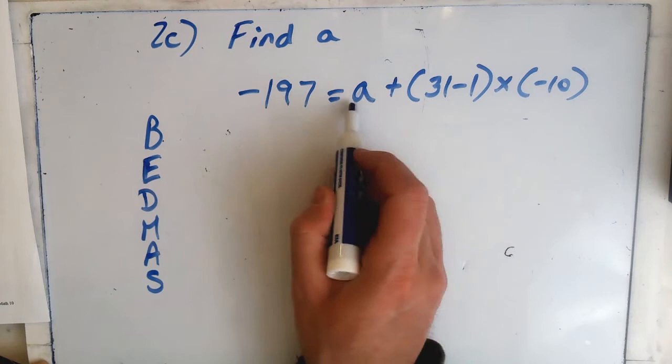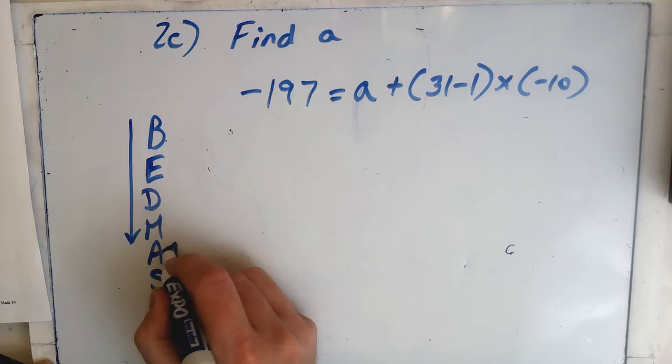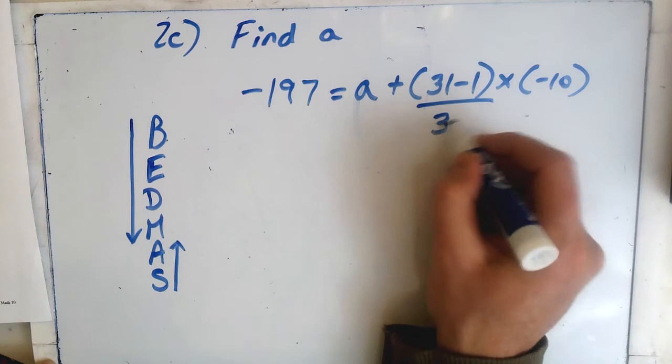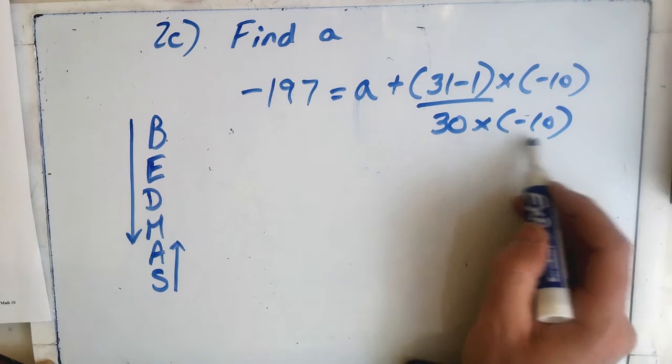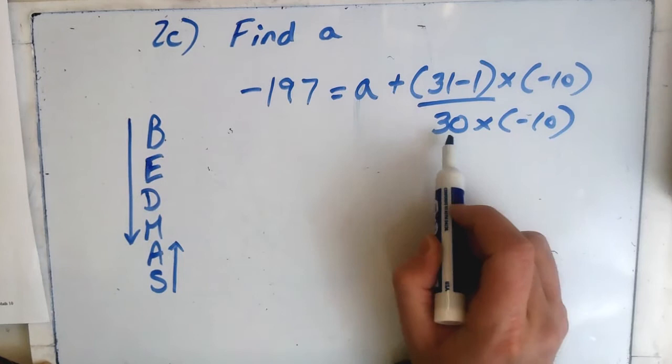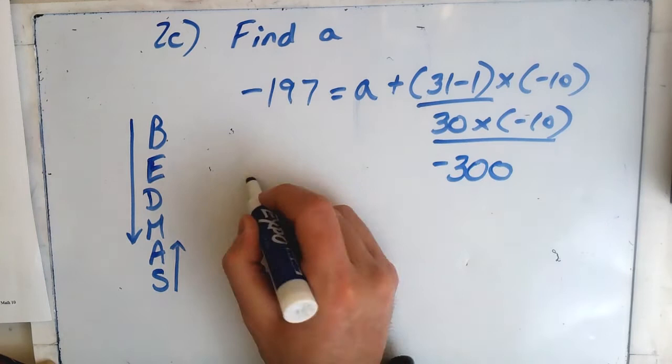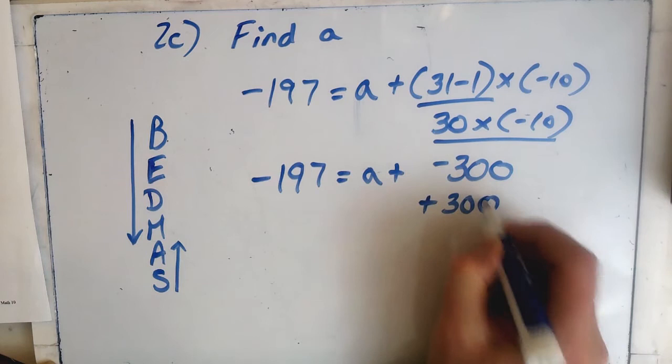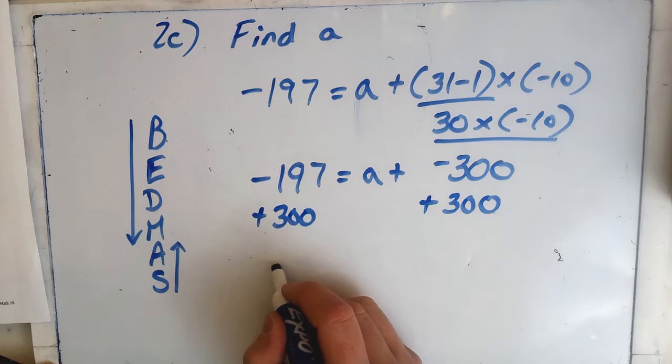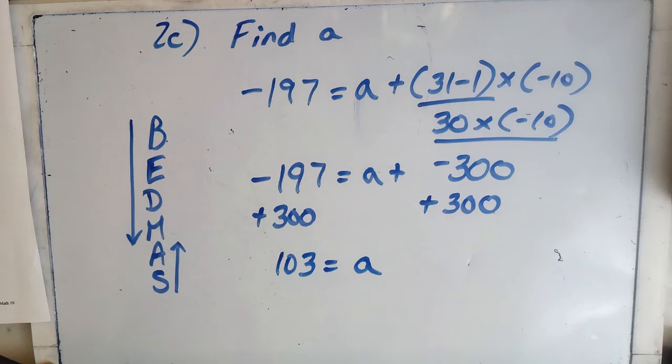The third part: we're trying to find A. The A is next to the addition, so we do BEDMAS until we get to multiplication, then switch to SAMDEB. Start with the brackets — here the brackets contain only one number, so we don't have to do anything inside; we just multiply by a negative number. Do not subtract 10. Now we're stuck, so we move the negative 300 by adding 300 to both sides, and we come up with our answer.